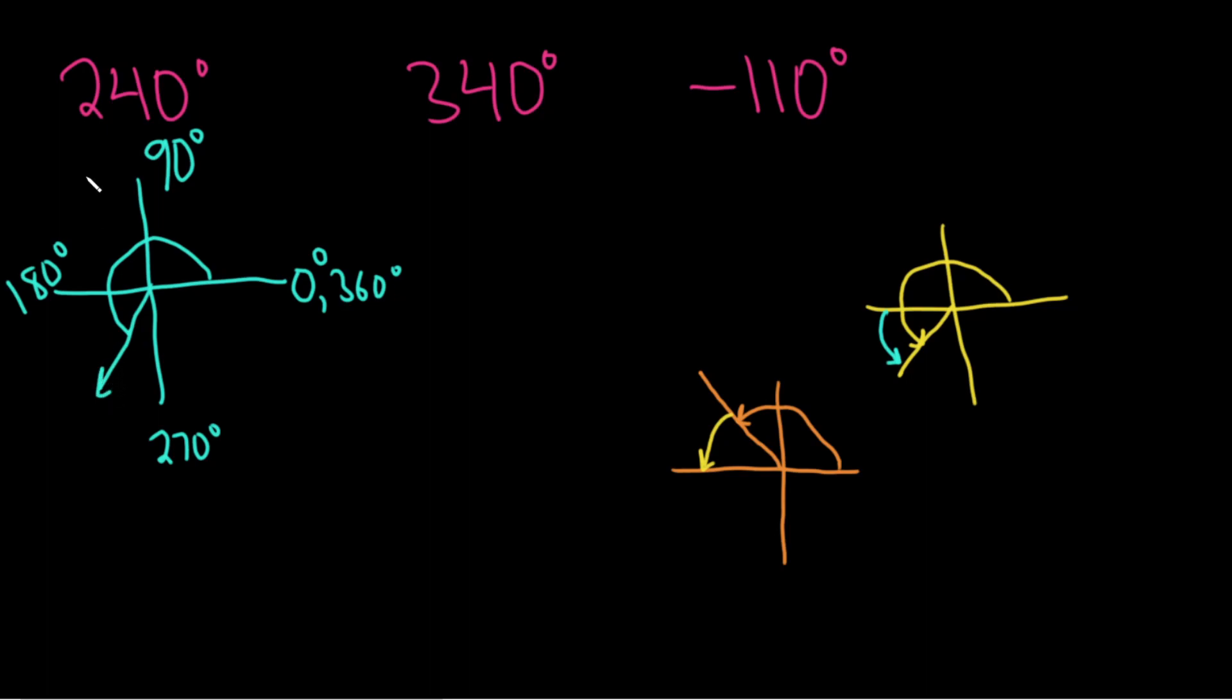And so the reference angle is the positive acute angle made with the terminal side of our angle and the x-axis. So in this case, it'll be right here. And so if our angle here is 240, and we're at 180, how much more do we need? Well, we need 60 more, right? Because if you add 60 to 180, you get 240. So in this case, the reference angle is θ equals 60 degrees.